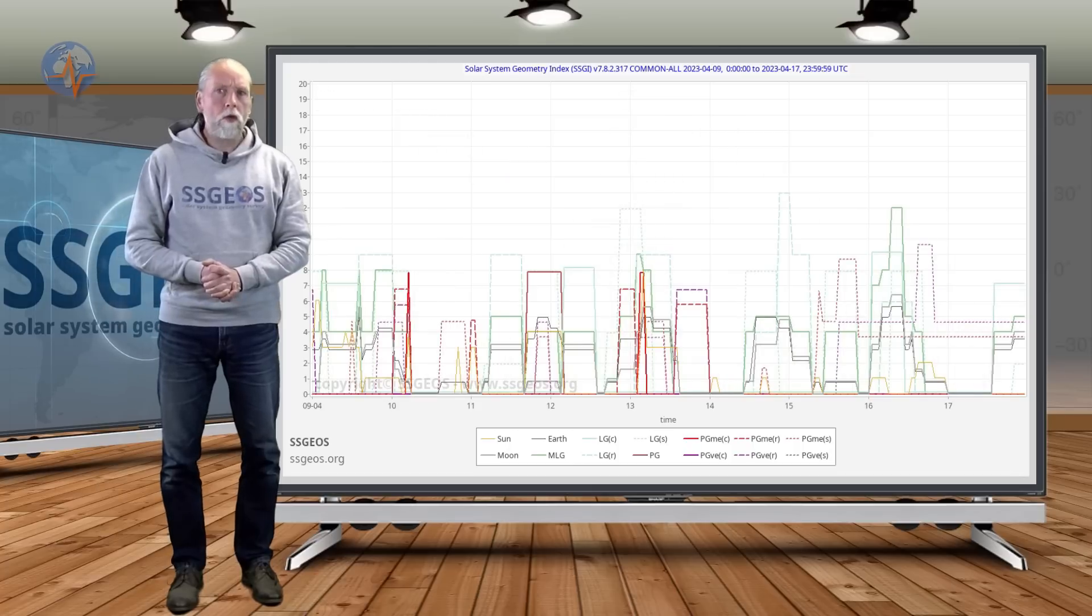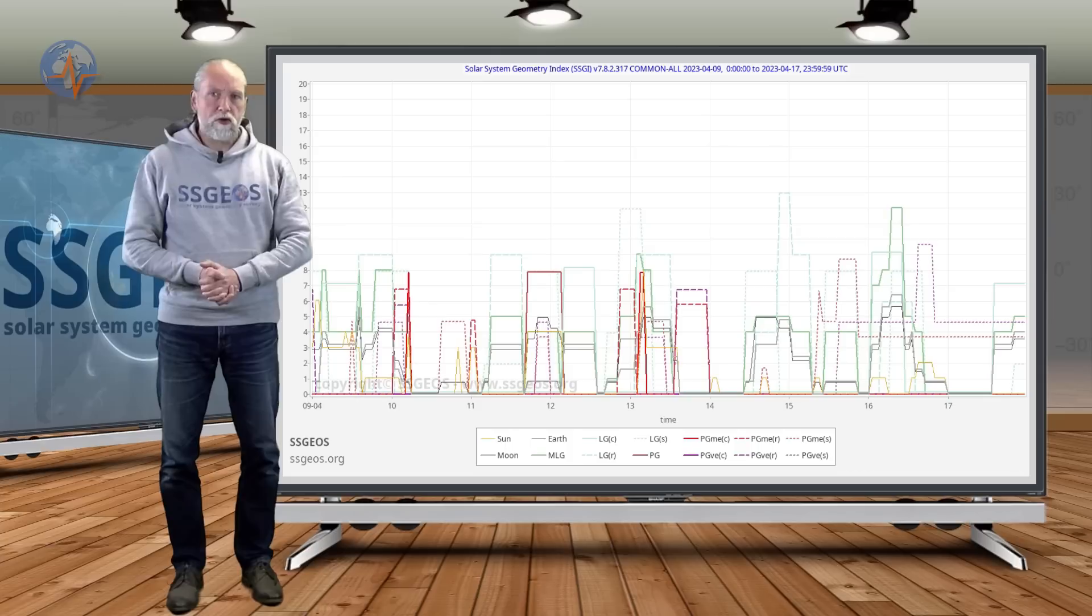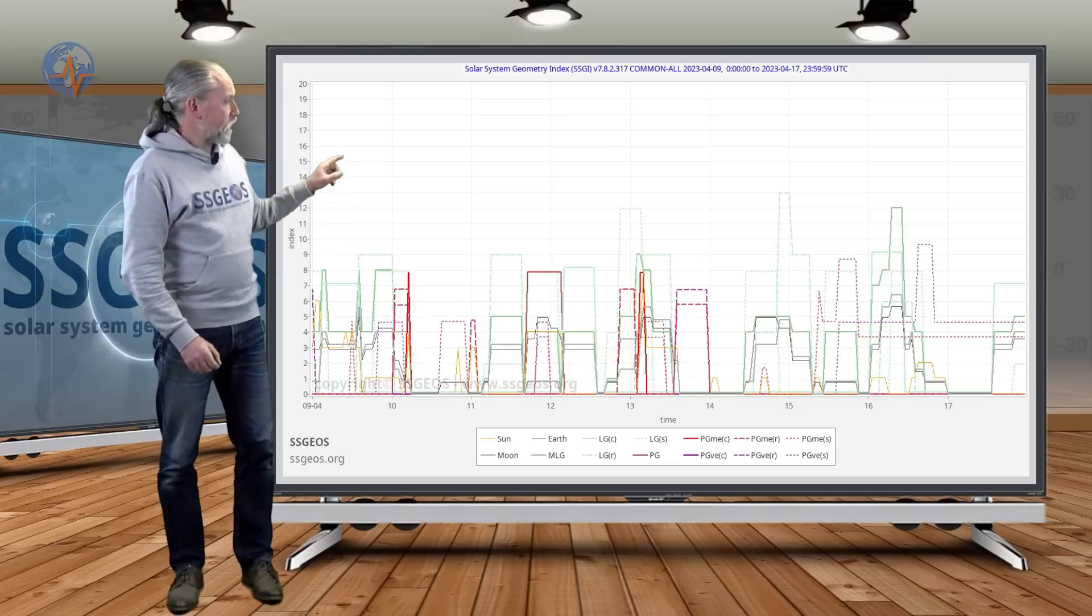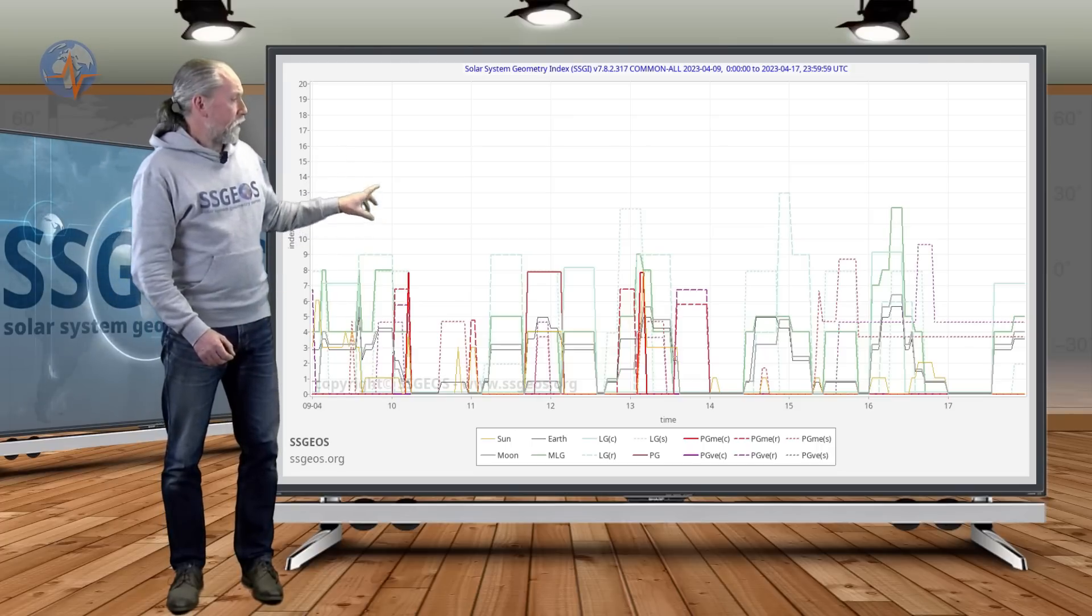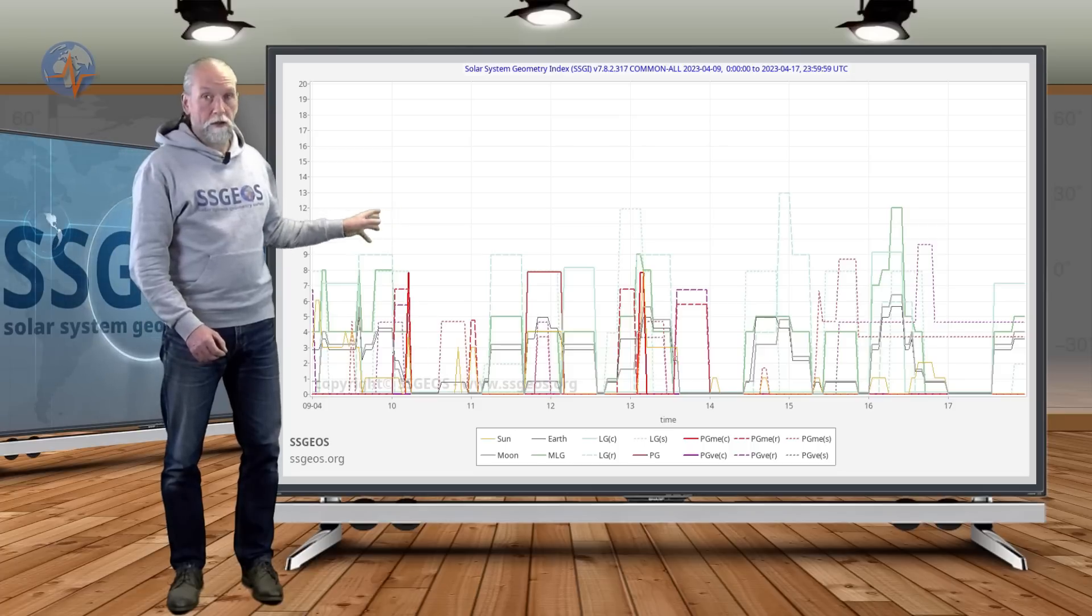So what are we going to have in the next few days? I already briefly mentioned the critical geometry, a clustering of planetary geometry around the 13th, that's today. And we can actually see that here on the SSGI graph, a red peak and also two 90-degree angles also involving Mercury.